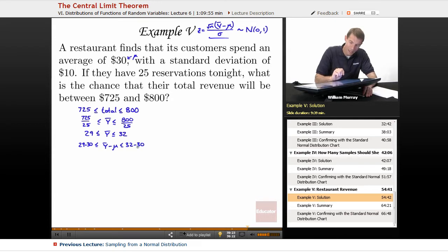And let me go ahead and divide by sigma. Divide all of these by sigma. Now my sigma is the standard deviation. Oh, there it is, it's $10 right there, $10.